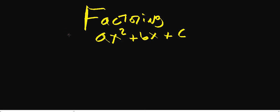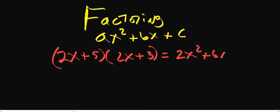So let's say if we start off with 2x plus 5, we're going to multiply that times 2x plus 3. You're going to get 2x squared plus 6x plus 10x plus 15, which gives us 2x squared plus 16x plus 15.